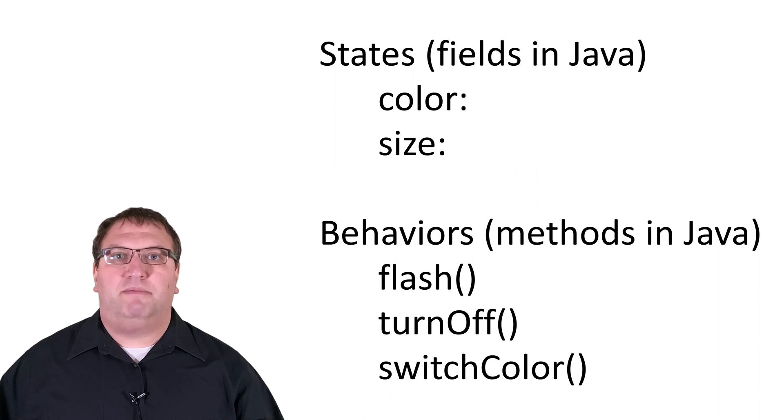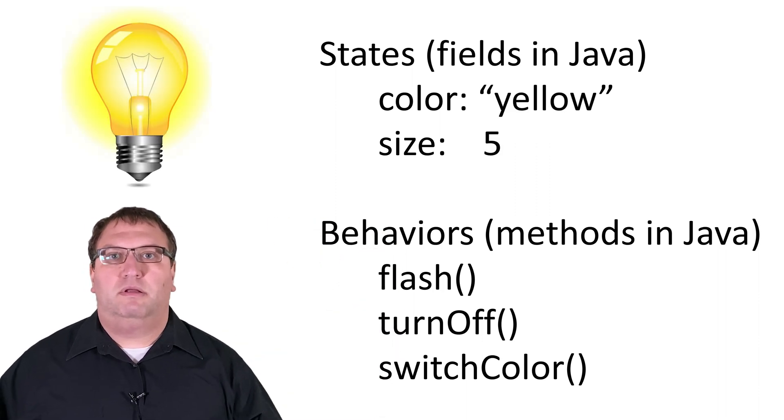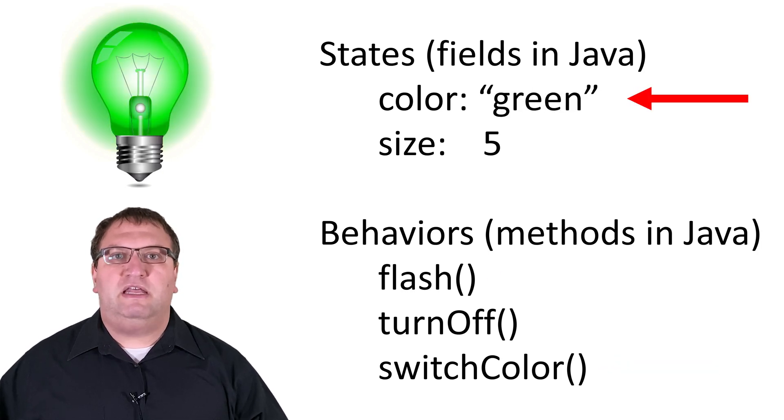Let's create a lightbulb object. The object has the value yellow for the color field and the value 5 for the size field. If we call the flash method, it causes the object to behave in a certain way. Now let's call the switch color method. You can see that the switch color method changed the value of the color field. It's very common for programmers to write methods to modify the values of fields.